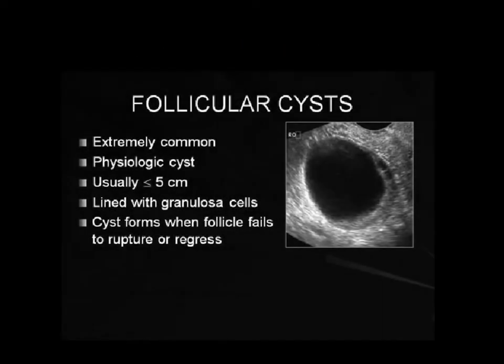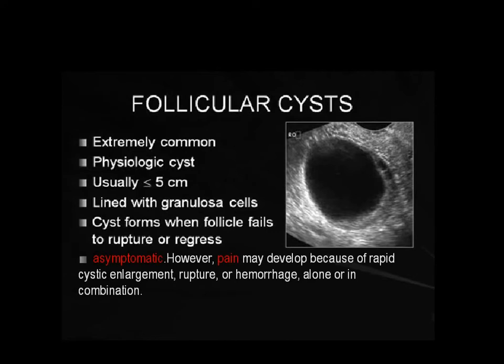Functional or follicular cysts are extremely common. They are physiologic, usually less than 5 cm, lined with granulosa cells, and form when the follicle fails to rupture or regress. As the follicle grows, the LH surge occurs but the follicle does not rupture — it remains intact and continues to enlarge. Usually asymptomatic, pain may develop because of rapid cystic enlargement, rupture, or hemorrhage. This is a functional cyst — it looks like a simple cyst with clear contents.